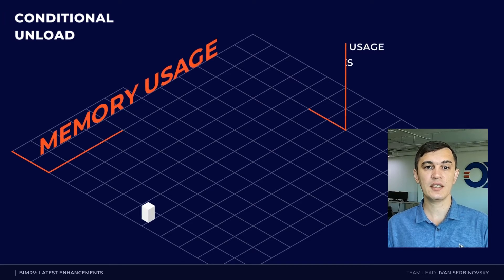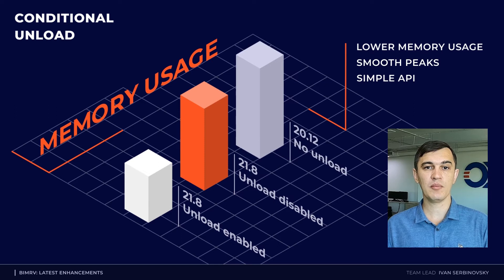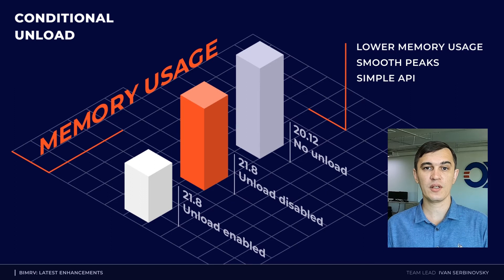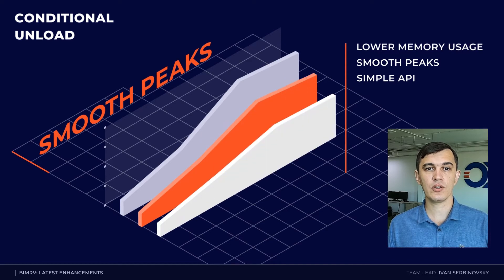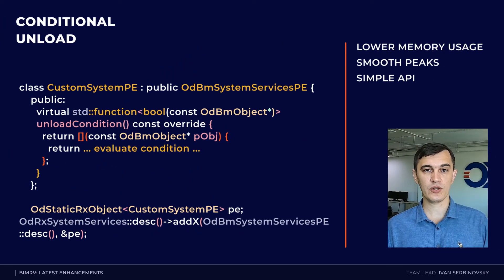Recently we implemented new functionality called Consistent Unloading. This is a simple API to tell BIM RV whether you want to keep an element in memory or not. That gives you the ability to be more confident about memory usage. For example, some rarely reused elements can be dumped to disk and decrease memory usage. Our calculations show that on average files of about 1 GB can gain up to 30 percent reduction. Implementing this functionality, we kept in mind high memory usage peaks during conversion of files. So we redesigned the conversion mechanism such that despite complex relationships between elements, we try to never use more than one element at a time on a single step, making memory consumption smoother.